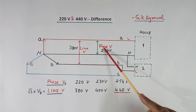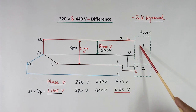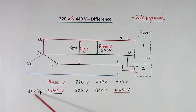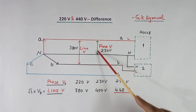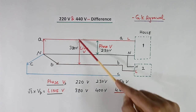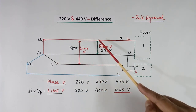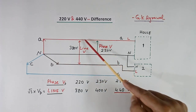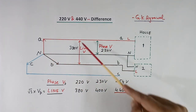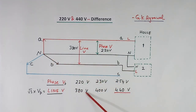Suppose the phase voltage is 220V — that is what we get in our house. Then the line voltage will be root 3 times more than the phase voltage. So if 220V phase voltage is multiplied by root 3, we get 380V. That is the line-to-line voltage. So phase voltage, one line to neutral, is 220V, and then line-to-line voltage will be 380V.